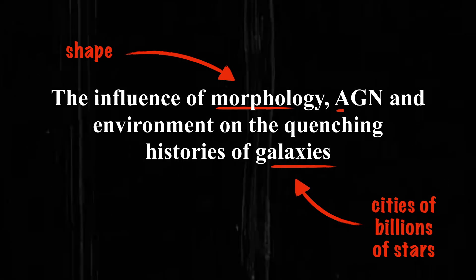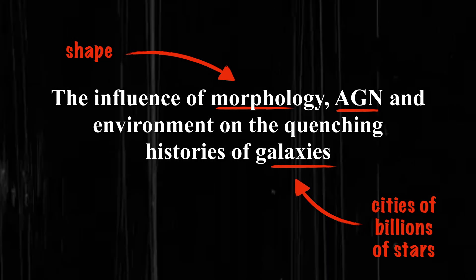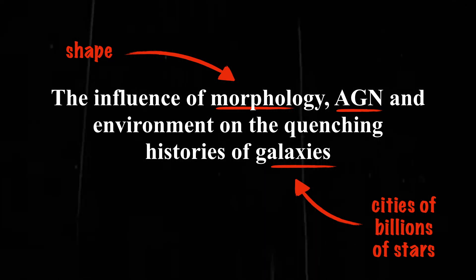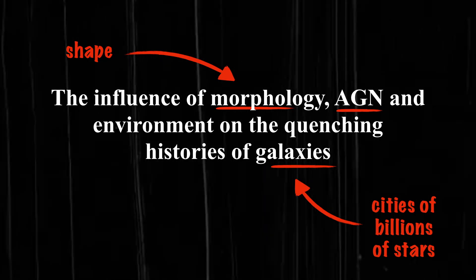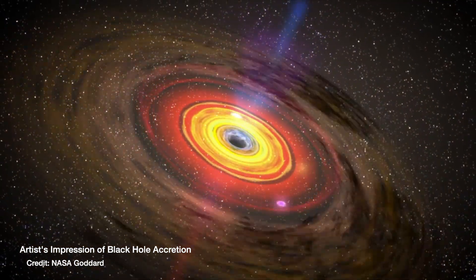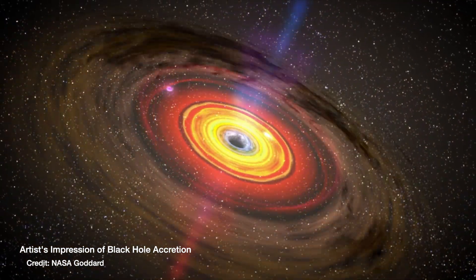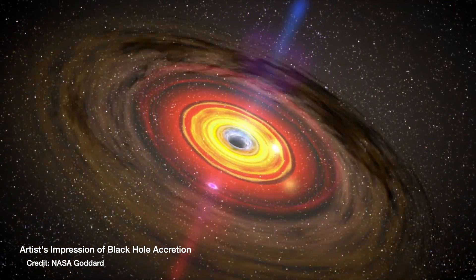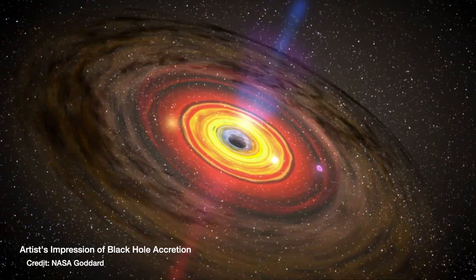Then you've got AGN. AGN stands for Active Galactic Nuclei - something is going on in the centre of these galaxies. We think these are essentially supermassive black holes that are growing. So if you have a galaxy and it's got a supermassive black hole in the centre, how does that affect its evolution?